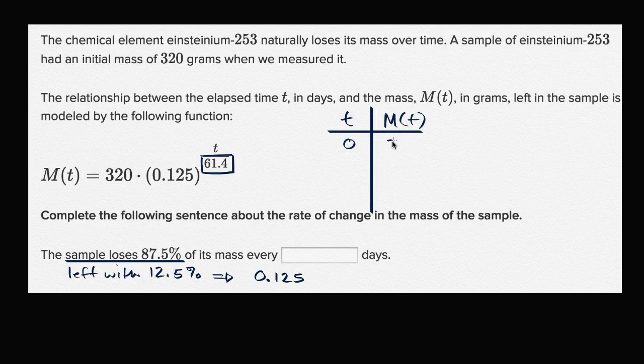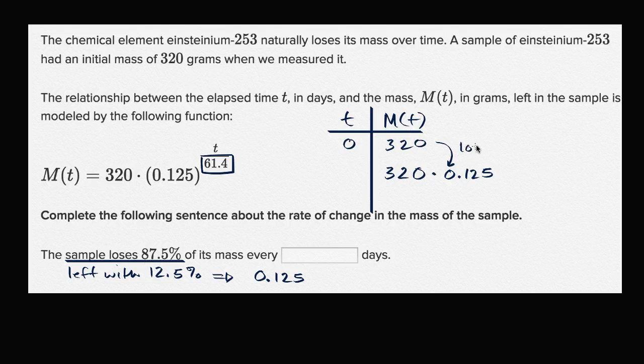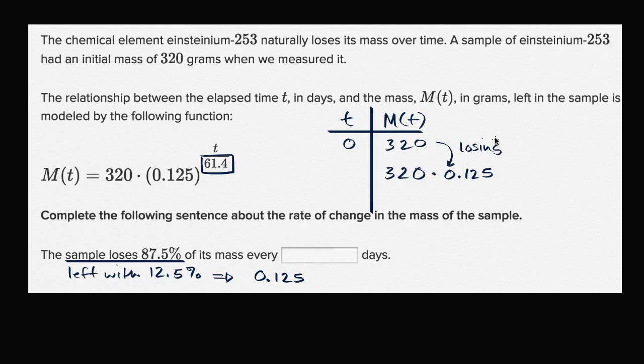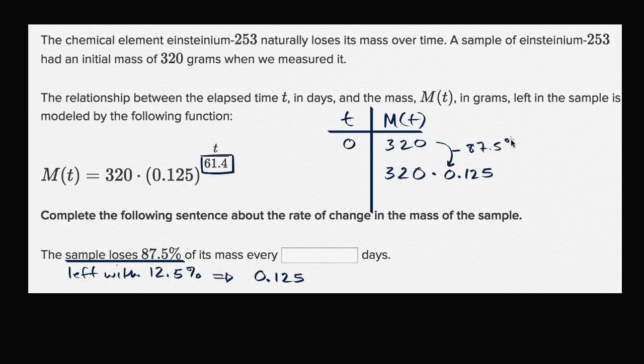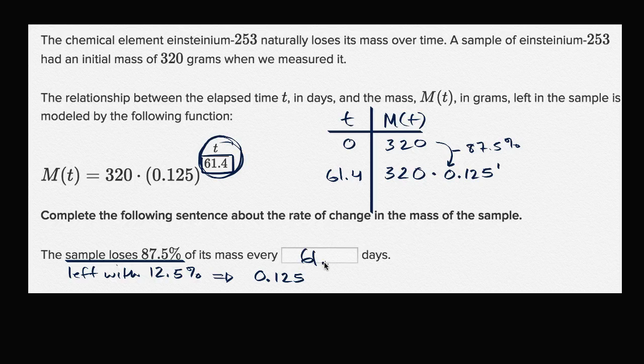When t is 0, m of t is 320. And so at what point, at what time, is m of t going to be 320 times 0.125? Because going from this to this, that is losing 87.5% of your mass. You could just use 0.125 to the first power. So what t do you have to make this exponent equal one? Well, t has to be 61.4. 61.4 days.